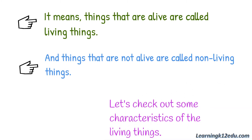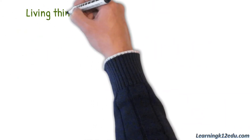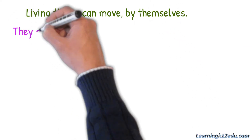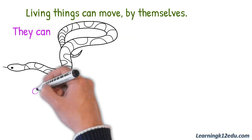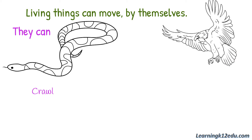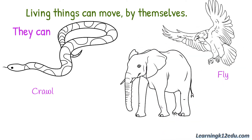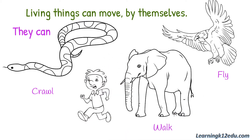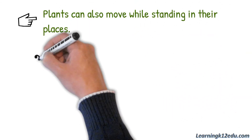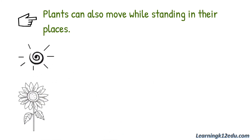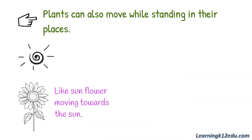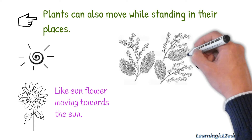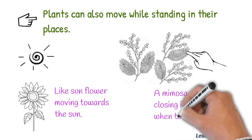Let us check out some characteristics of living things. Living things can move by themselves. They can crawl, fly, walk, and run. Plants can also move while standing in their places, like a sunflower moving towards the sun, or a mimosa plant closing its leaves when touched.